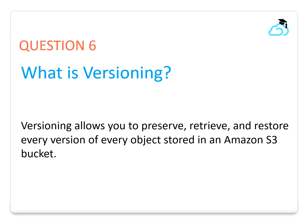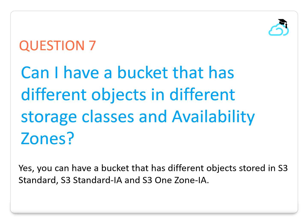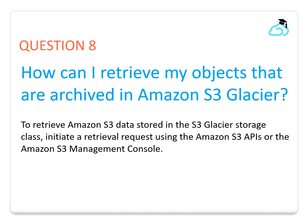Question 6: What is versioning in AWS Simple Storage Service? Versioning allows you to preserve, retrieve, and restore every version of every object stored in an Amazon S3 bucket. Question 7: Can I have a bucket that has different objects in different storage classes and availability zones? Yes, you can have a bucket with different objects stored in S3 Standard, S3 Standard-Infrequent Access, and S3 One Zone-IA storage classes.